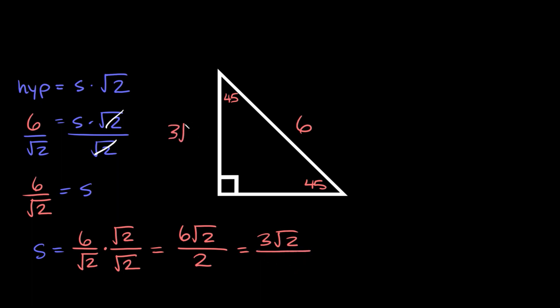And again, if one of the sides is equal to 3√2, that means the other short leg is also equal to 3√2.